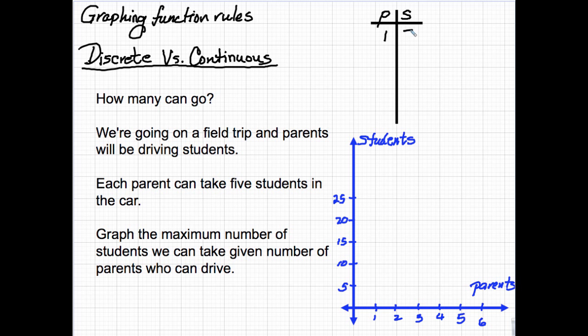So if one parent drives, we can take five students, two drive, 10, 3, 15, 4, 20, and so on. Now, let's make a graph of those points. 1, 5, 2, 10, 3, 15, and 4, 20.